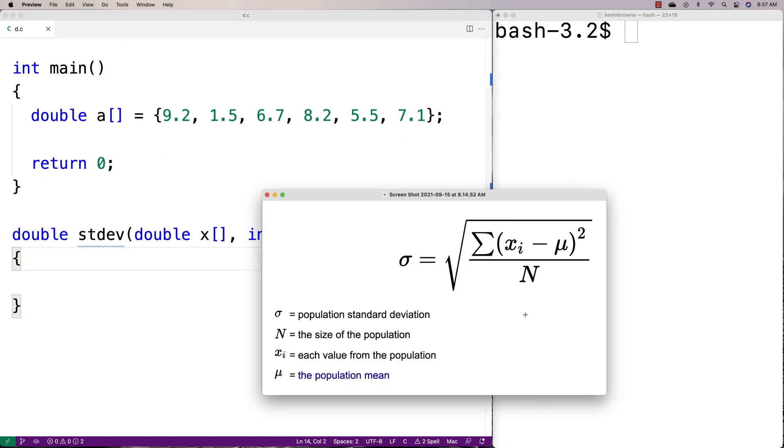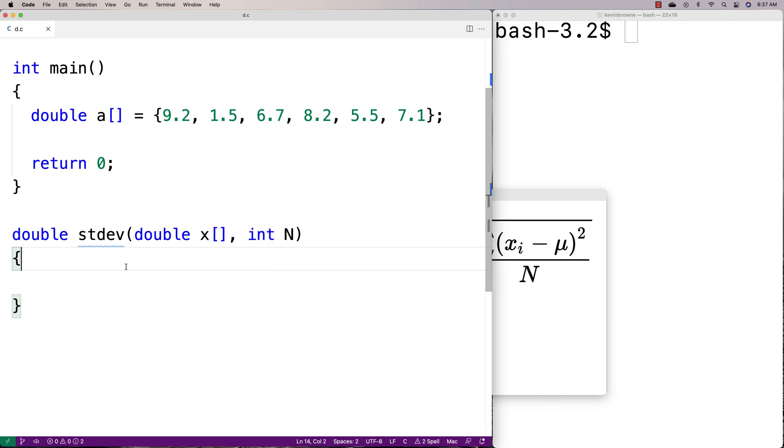The first thing we need to do is compute the mean. We need the mean first before we can subtract it from each element. We'll declare double mean equals zero and total equals zero. We'll add together all the elements in the array and divide by the number of elements, and that'll give us the mean.